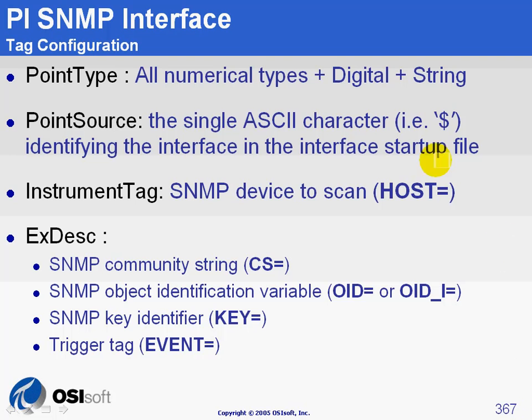First of all, the point type. You could use any numerical point type; we normally use float32. For textual values, you could use a string type.